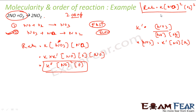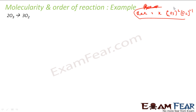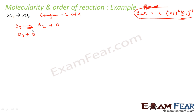Let's take one more example: ozone converting into oxygen. The experimental rate law is: rate = k[O3]^2 [O2]^-1. Let's see if we can find this using the molecularity concept. This is again a complex two-step reaction. First step: O3 → O2 + O (fast). Second step: O3 + O → 2O2 (slow).